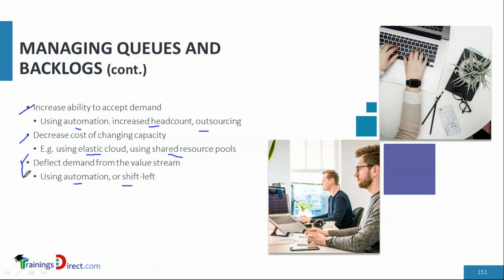Deflecting demand is more challenging because it may require better self-service systems, better knowledge management, and automation. It also requires changes to people's behavior, improved processes, modified practices, and technology being put in place. In DevOps, deployment and release are pushed toward development, and provisioning of systems and components is done automatically — a technical engineer can write a script to deploy a code package across thousands of systems.